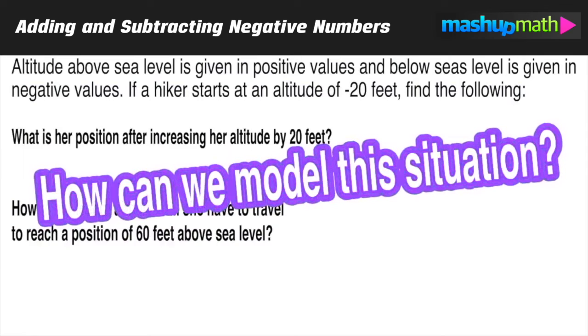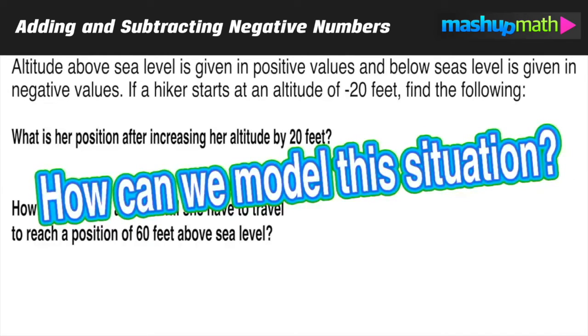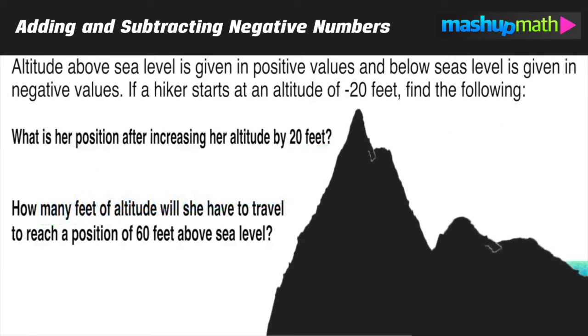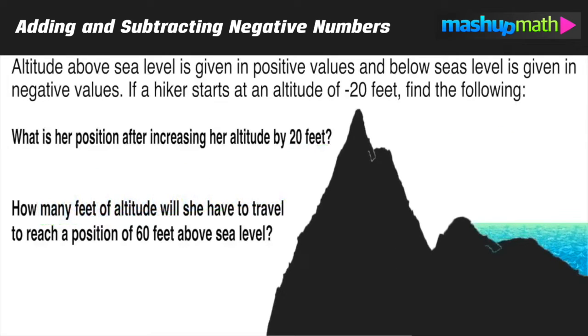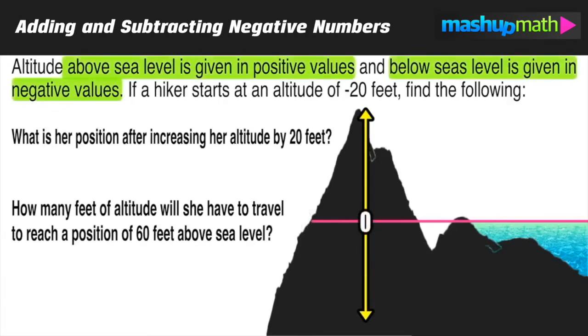So now let's ask ourselves, how can we model this situation? If we can see what's going on, we'll be better able to answer this question. Let's imagine a place where somebody would actually go hiking and change elevation by either going up or down in altitude. We can also imagine a horizontal line representing sea level and a vertical line representing altitude either above or below sea level.